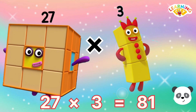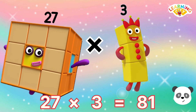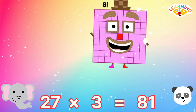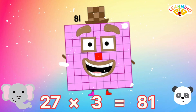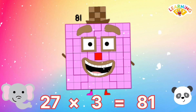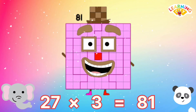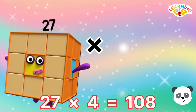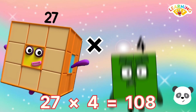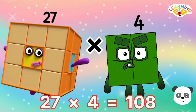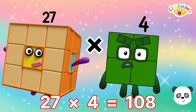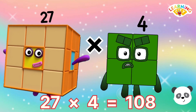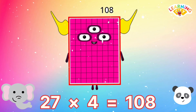27 multiply 3 equals 81. 27 multiply 4 equals 108.